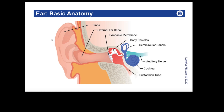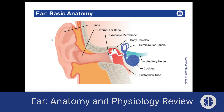Moving on to the ear now. You can find this illustration in our Medical Surgical Nursing flashcard deck. We have our external ear structures, which include the pinna as well as the external ear canal. Cerumen, which is a fancy name for earwax, is an expected finding in the external ear canal. Also, when you hear the term otitis externa, that is referring to inflammation of the external ear canal — it's also called swimmer's ear.